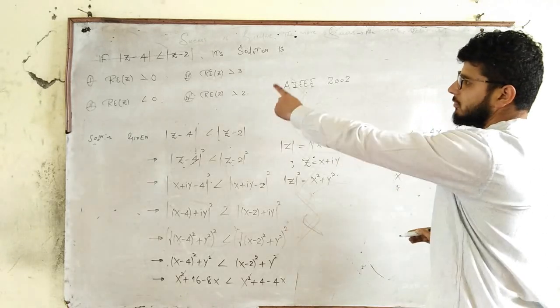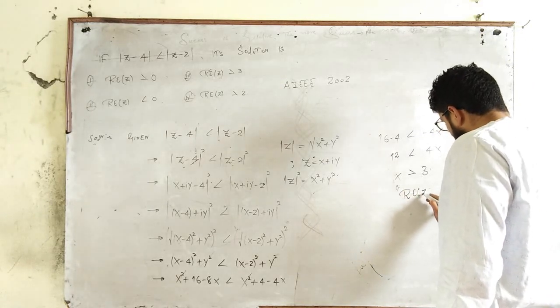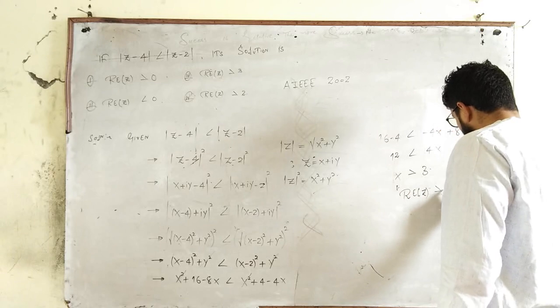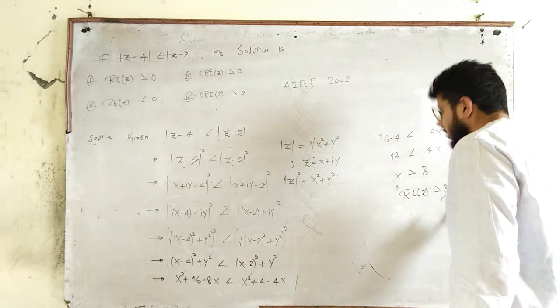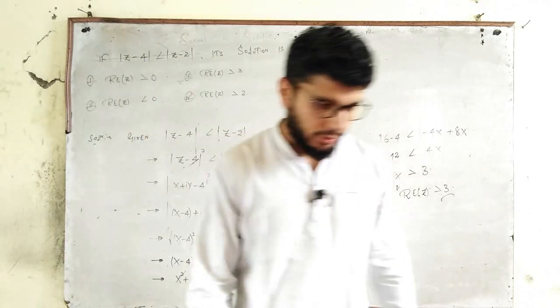Now what was x? x was the real part of z. So the result is Re(z) is greater than 3. So option number third is correct. Thank you.